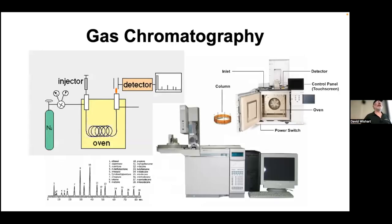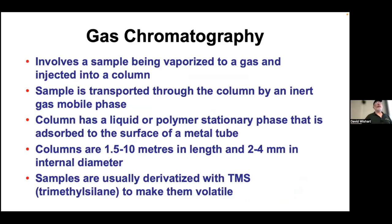There's another technique where the mobile phase isn't water or acetonitrile — it's a gas, usually helium — and instead of running at room temperature, things run in an oven. This is gas chromatography, or GC. Like an HPLC system, you have an injector, but instead of a pump pushing liquid, you have a gas tank. Things pass through a coiled column — very tiny and long — in an oven, then go to a detector. Detectors include flame ionization or a mass spectrometer.